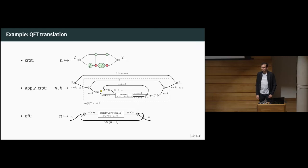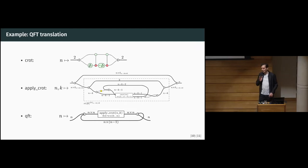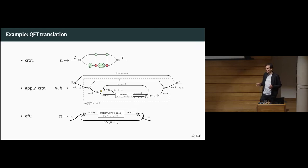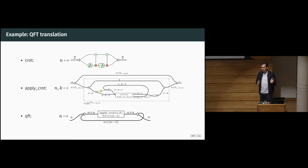Q: In the original formulation of Proto-Quipper-D there's the linear modality bang thing — do you have anything to say about encoding that in your fragment? A: We looked a bit into encoding exponential types. It gets complex really fast. You don't really want to go into having exponential wires, because then you are able to represent non-physical things like cloning. So it's not obvious, at least for me, how to go directly. That's one of the reasons why we have to take a fragment of Proto-Quipper-D.